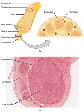Nerves that transmit signals from the brain are called motor or efferent nerves, while those that transmit information from the body to the CNS are called sensory or afferent nerves. Spinal nerves serve both functions and are called mixed nerves. The PNS is divided into three separate subsystems: the somatic, autonomic, and enteric nervous systems. Somatic nerves mediate voluntary movement. The autonomic nervous system is further subdivided into the sympathetic and parasympathetic nervous systems. The sympathetic is activated in emergencies to mobilize energy, while the parasympathetic is activated when organisms are in a relaxed state. The enteric nervous system functions to control the gastrointestinal system, and both autonomic and enteric systems function involuntarily.